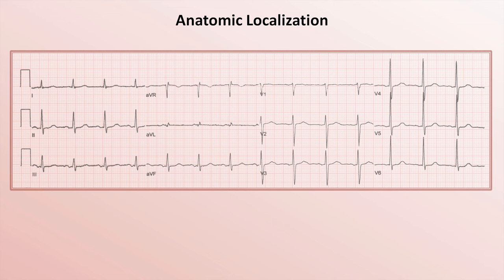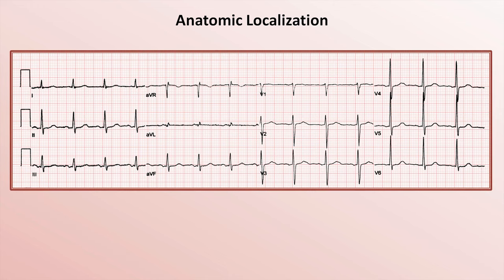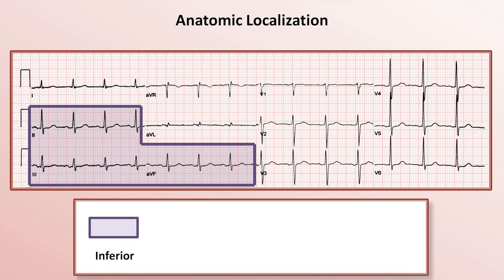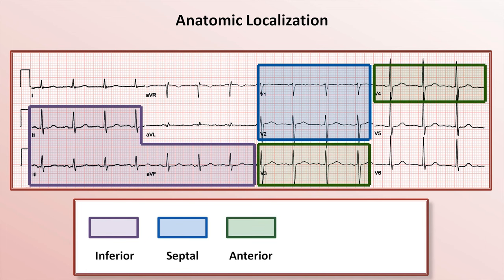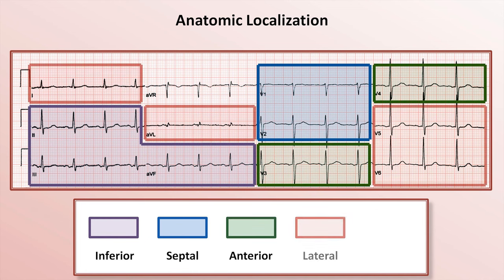To understand how to connect an EKG tracing to anatomic localization, I'll need to also review those lead groupings. As discussed in one of the earliest videos in this course, the 12 EKG leads are frequently placed into groups based on their ability to identify pathology in certain parts of the heart. Leads 2, 3, and AVF are the inferior leads; V1 and V2 are the septal leads; V3 and V4 are the anterior leads; and V5, V6, 1, and AVL are the lateral leads.